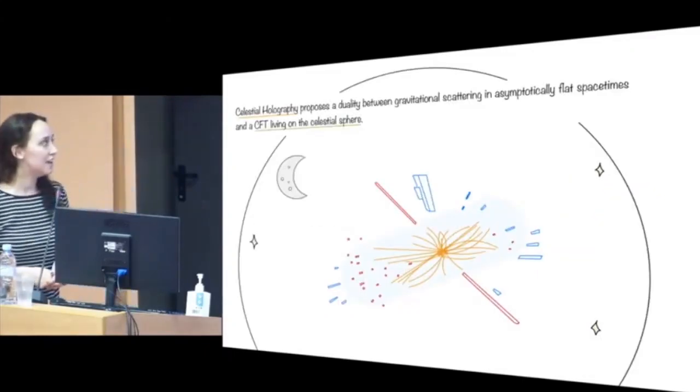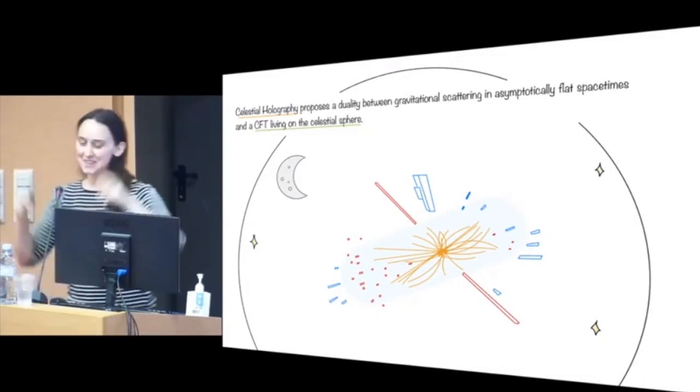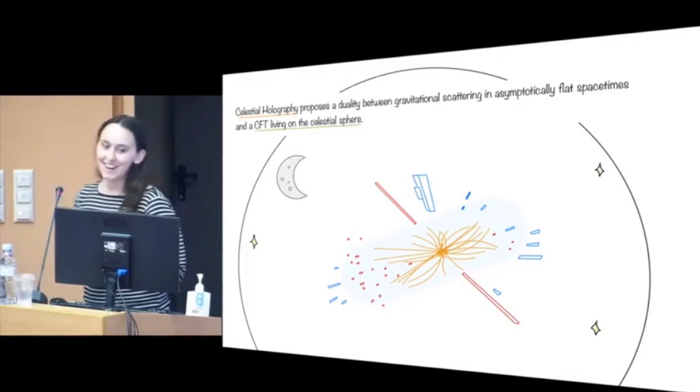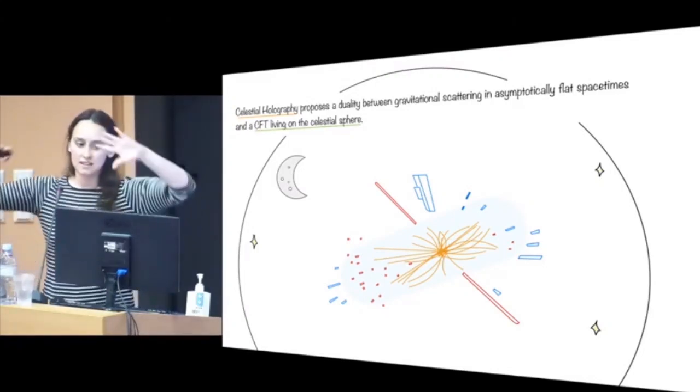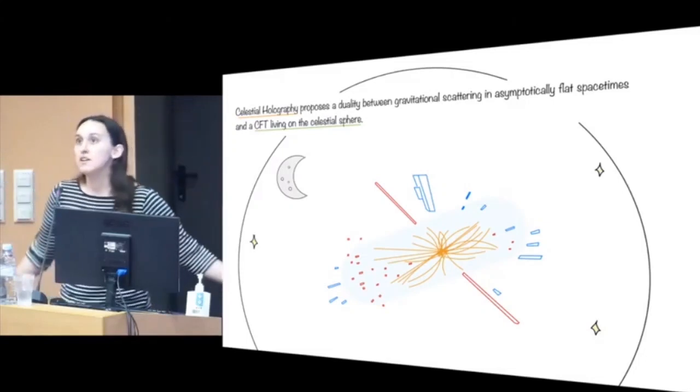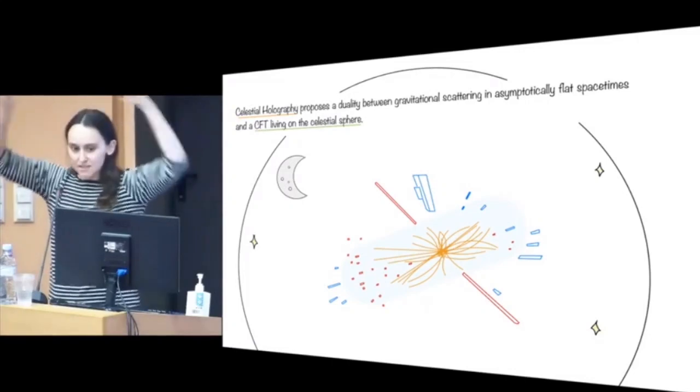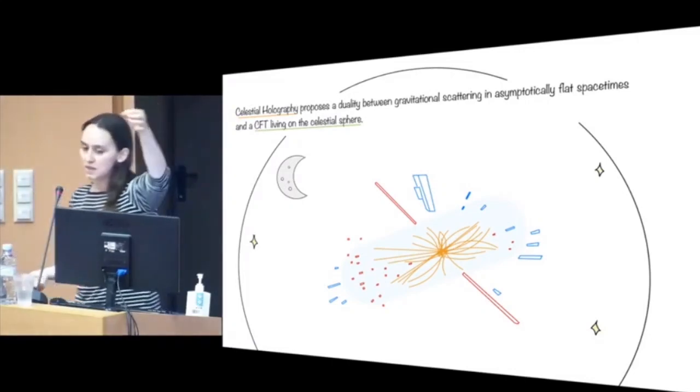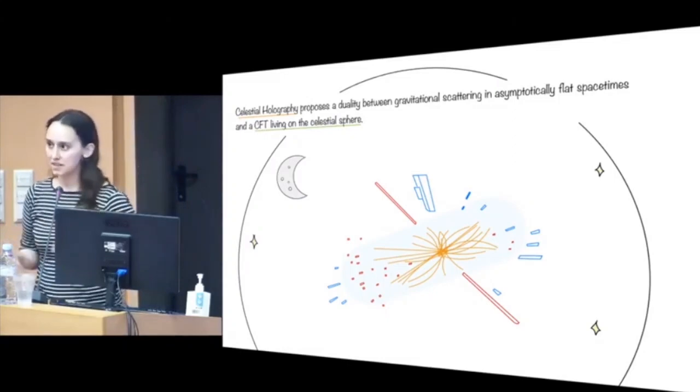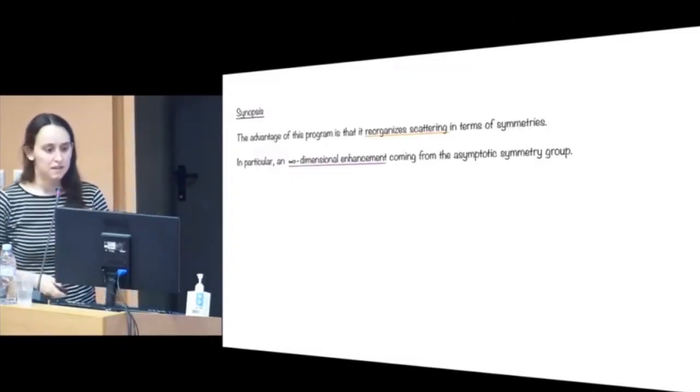Every cult has their terminology. So what is the celestial holography trademark? It's a proposed duality between gravitational scattering and asymptotically flat spacetimes, and a CFT that lives in the celestial sphere. So you look up in the night sky, you see where all the stars are. That space is our celestial sphere.